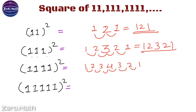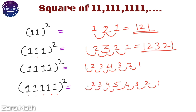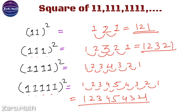So the answer is 1234321, which is the square of 1111. Now let's quickly figure out the square of 11111 — you can find the answer along with me. The number of digits are 5. On the right: 5 minus 1 is 4, 4 minus 1 is 3, 3 minus 1 is 2, 2 minus 1 is 1. Similarly on the left: 5 minus 1 is 4, then 3, 2, 1. So the answer is 123454321, which is the square of 11111.